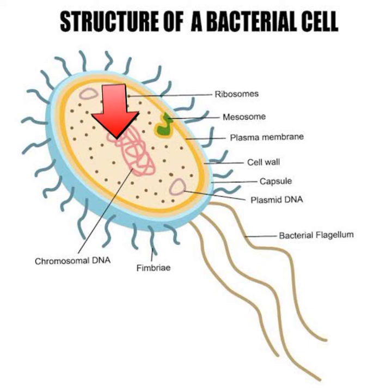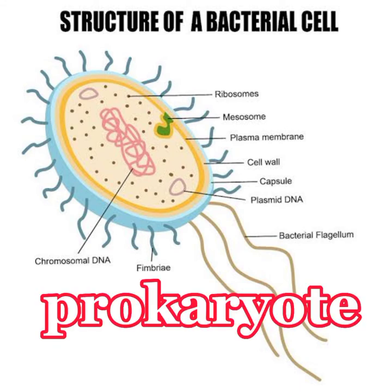The nucleoid is a region where chromosomal material is present. Most bacteria have a single circular chromosome; few bacteria have two or more. There is no proper nucleus in bacteria. This nucleoid region, which contains chromosomes, does not have a nuclear membrane, nucleolus, or nucleoplasm. So bacteria differs from eukaryotes on the basis of nucleus — bacteria lacks a true nucleus and is a prokaryote.